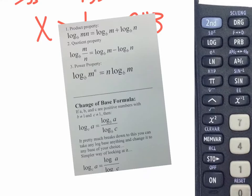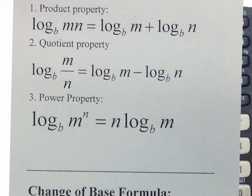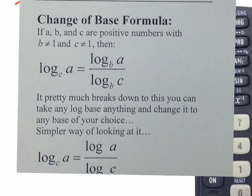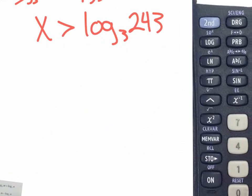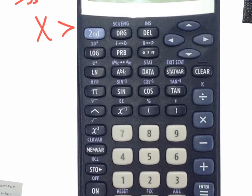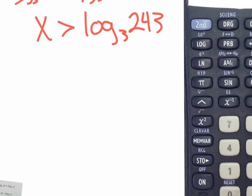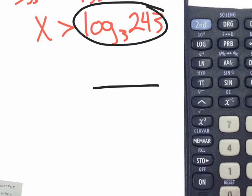On that little half sheet of paper with the log properties, I also gave you the change of base formula. The change of base formula says that you can take any logarithm with any base and change it to whatever base you want, as long as you split it into two and make a fraction — with the log of whatever base you want on top and on the bottom. If we have a calculator that only does common logs or natural logs, it doesn't do base 3. What do you want — LN or common log? Common log? Okay, let's go with common log.